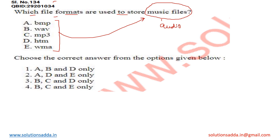Here we have BMP, WAV, MP3, HTM, and WMA. We are very much familiar with the file extension MP3, which we all know is used for the audio file. So those options in which option C is present, we can take that; the rest of the options we can directly eliminate.